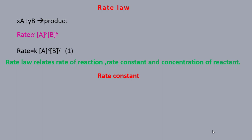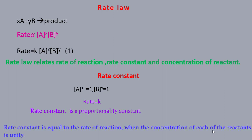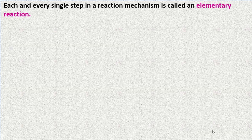Rate constant: in equation number 1, when [A]^x = 1 and [B]^y = 1, rate equals k. So k is the rate constant — it is the proportionality constant. The rate constant is equal to the rate of reaction when the concentration of each reactant is unity. Each and every single step in a reaction mechanism is called an elementary reaction.